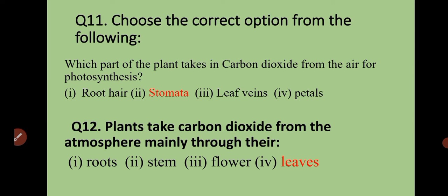Question number eleven: which part of the plant takes in carbon dioxide from the air for photosynthesis? Options are root hair, stomata, leaf veins, and petals. Answer: stomata. Stomata takes in carbon dioxide from the air. Question number twelve: plants take carbon dioxide from the atmosphere mainly through their roots, stem, flowers, or leaves? Answer: leaves.